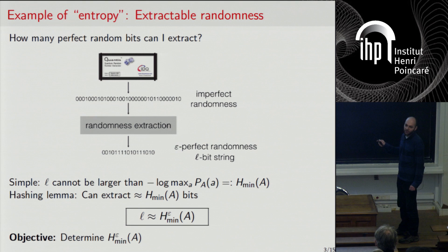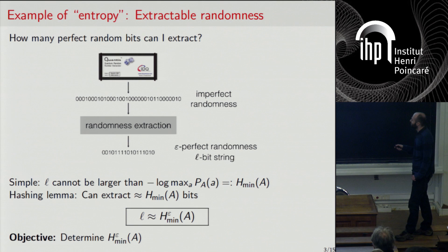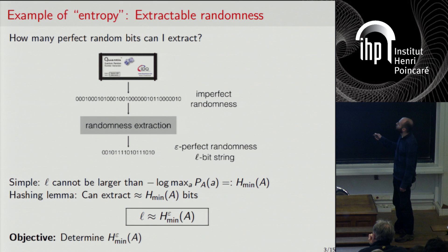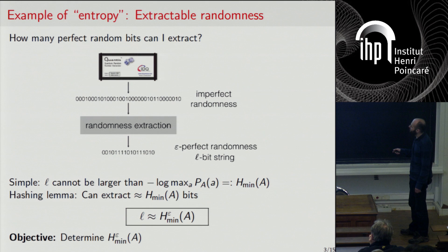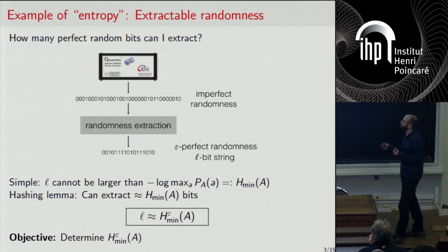There is a theorem saying that you can find a family of functions that extracts up to smaller order terms the min-entropy of the source. So the maximum number of bits extractable from an imperfect source of randomness is given by minus log of the maximum probability. There is a small smoothing parameter epsilon: I don't want perfect randomness, but something epsilon-close to random, where epsilon can be thought of as a small constant.